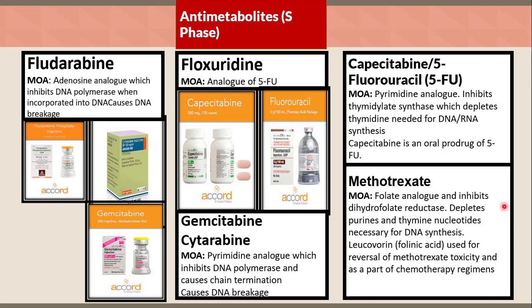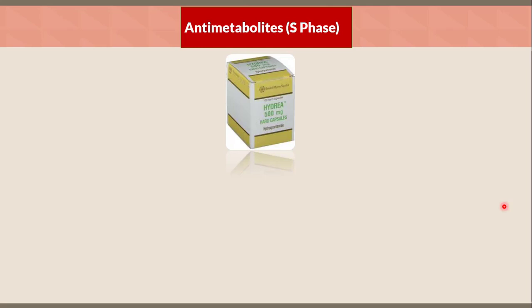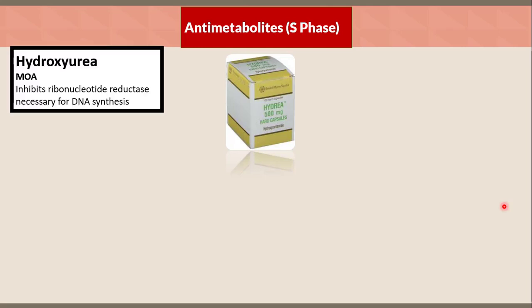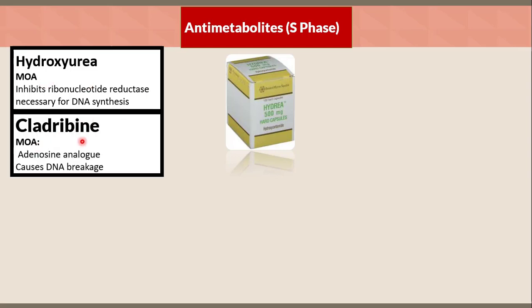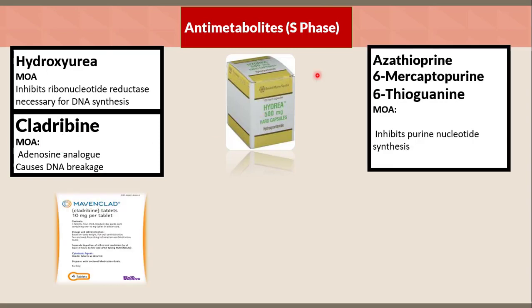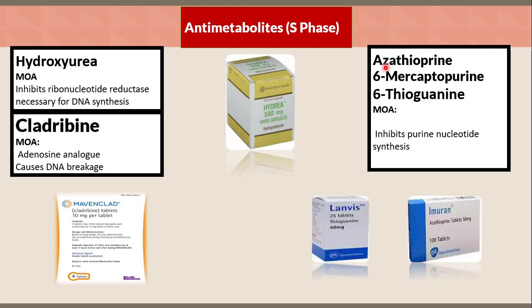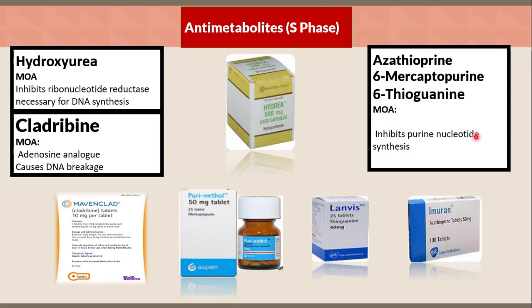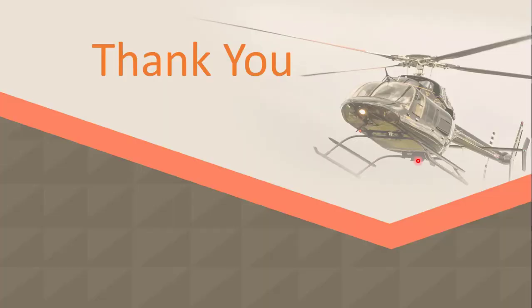Summary of antimetabolites (S-phase specific): capecitabine and fluorouracil — pyrimidine analog, inhibits thymidylate synthase, depletes thymidine needed for DNA and RNA synthesis. Capecitabine is an oral pro-drug of 5-FU. Gemcitabine and cytarabine — pyrimidine analog, inhibits DNA polymerase, causes chain termination and DNA breakage. Fludarabine — adenosine analog, inhibits DNA polymerase; when incorporated into DNA, causes DNA breakage. Methotrexate — folate analog, inhibits dihydrofolate reductase, depletes purine and thymidine nucleotides necessary for DNA synthesis. Leucovorin (folinic acid) is used for reversal of methotrexate toxicity. Hydroxyurea — inhibits ribonucleotide reductase. Cladribine — adenosine analog, causes DNA breakage. Azathioprine, 6-mercaptopurine, 6-thioguanine — inhibit purine nucleotide synthesis.